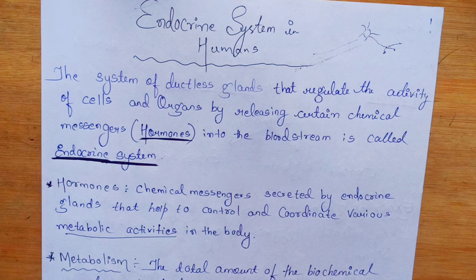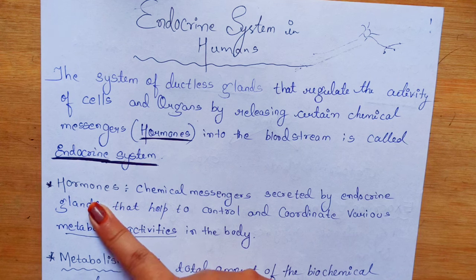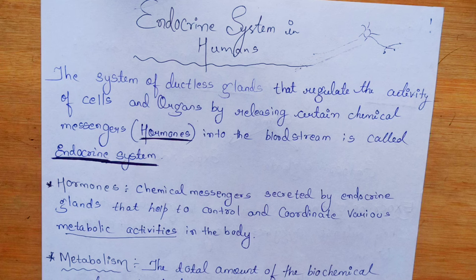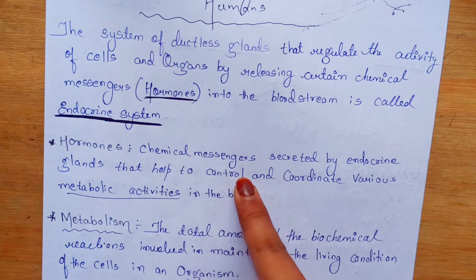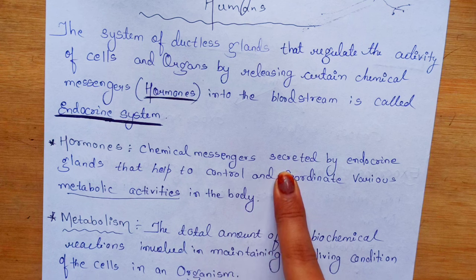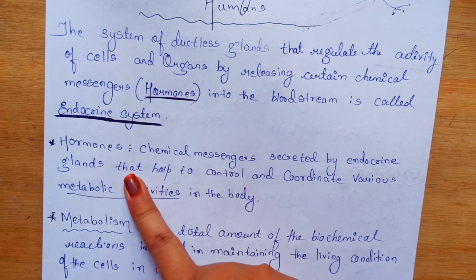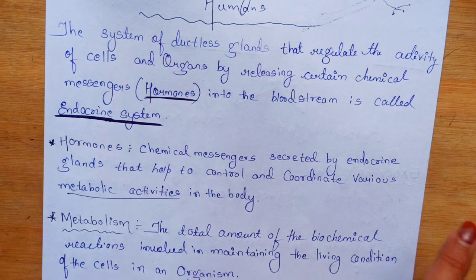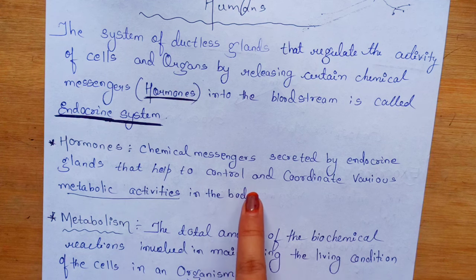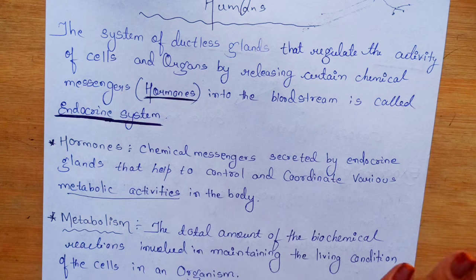Now let's look at the definition of hormones. Hormones are chemical messengers which are secreted by endocrine glands — note: use the word 'secreted' not 'released' in this chapter. These hormones help to control and coordinate various metabolic activities in the body.